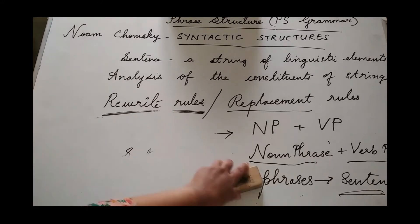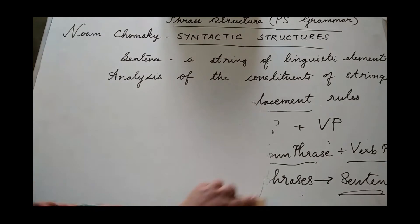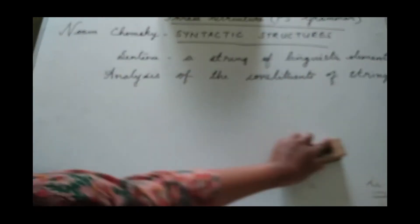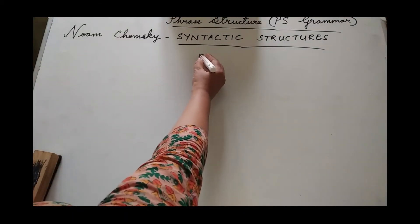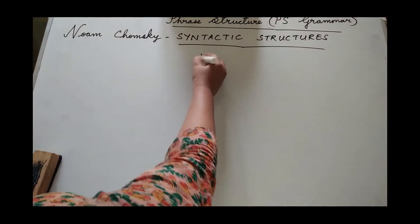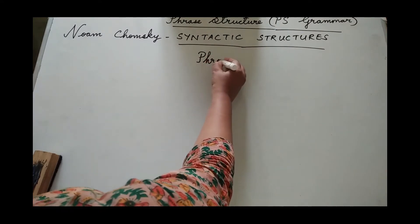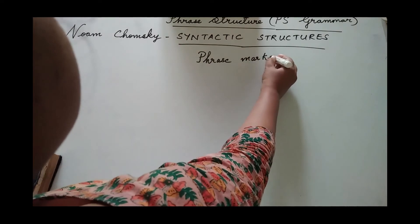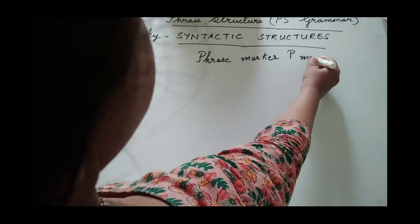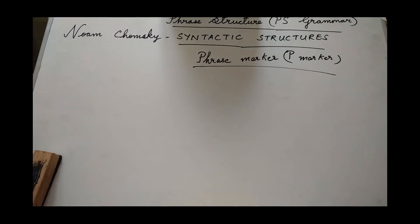So it is called a phrase marker, or P-marker. The pictorial representation of the analysis of the syntax of a sentence in PS grammar is called a phrase marker or a tree marker. For example, they may give you a sentence and ask you to write down the phrase marker of the sentence, or the P-marker — that is nothing but the diagrammatic representation of the syntax of the given sentence.